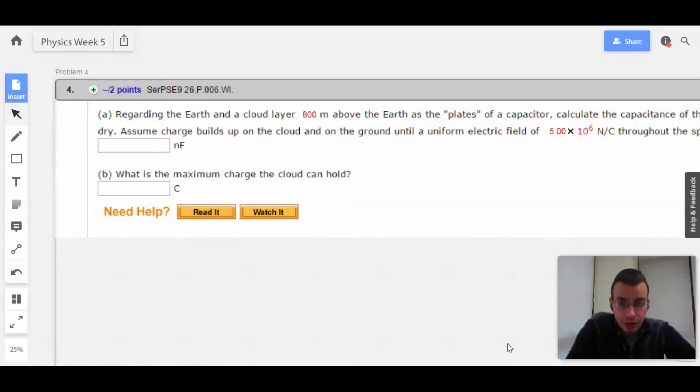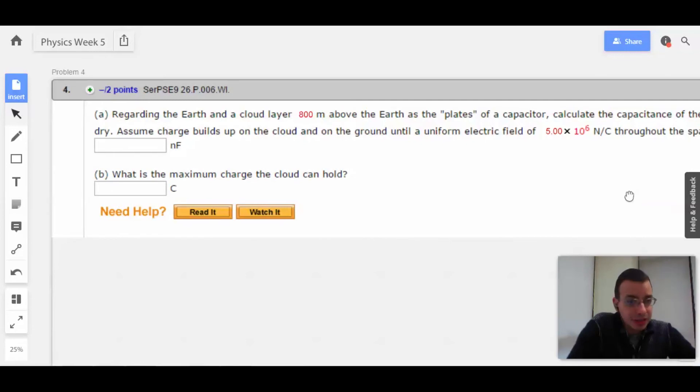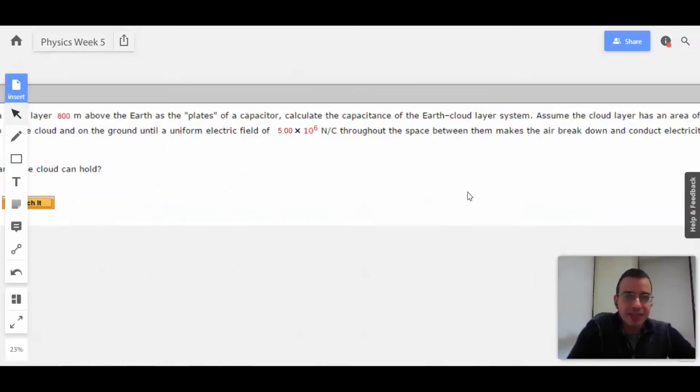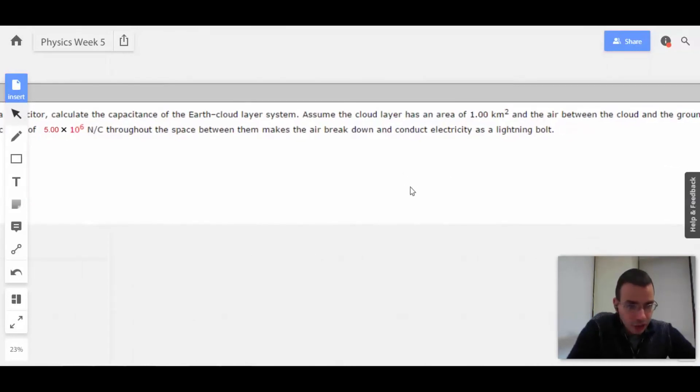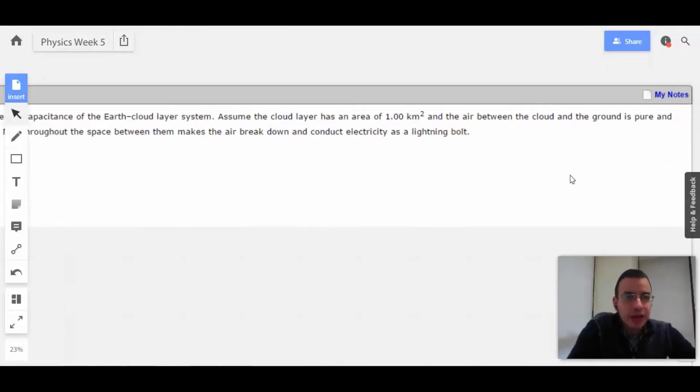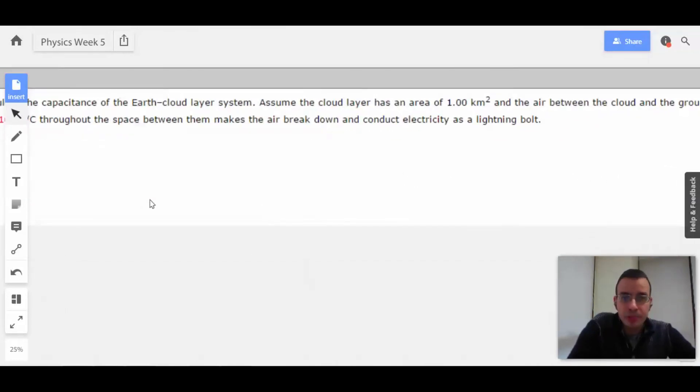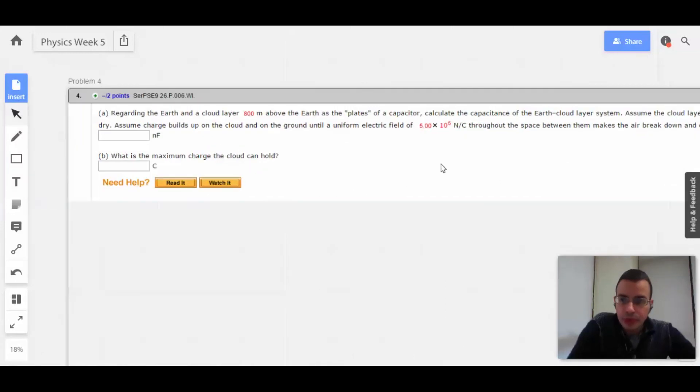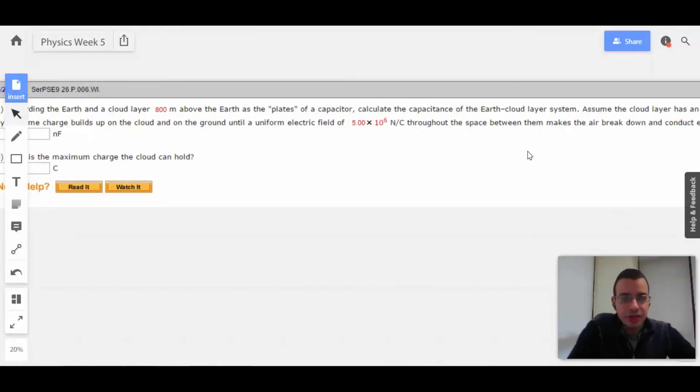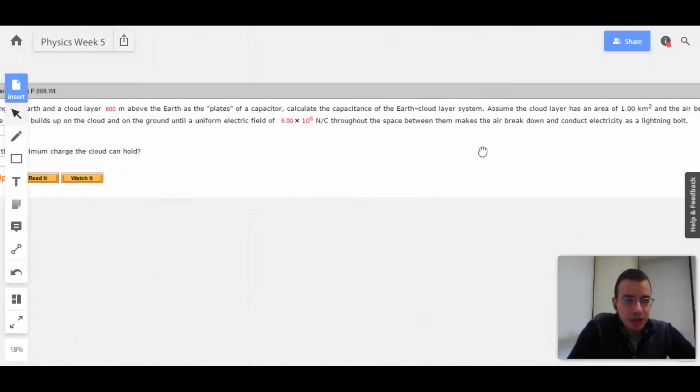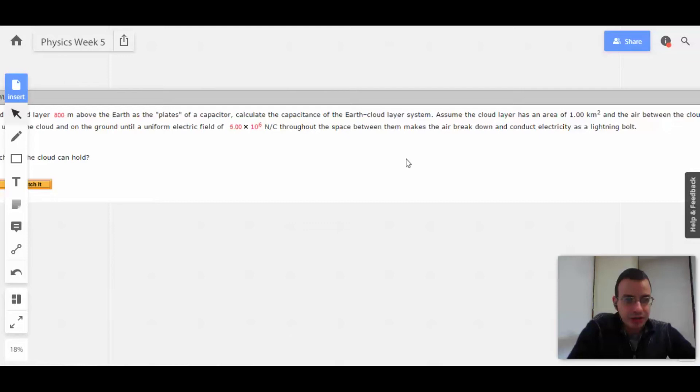Problem 4: Regarding the Earth and a cloud layer 800 meters above the Earth as the plates of a capacitor, calculate the capacitance of the Earth-cloud layer system. Assume the cloud layer has an area of 1 square kilometer and the area between the cloud and ground is pure and dry. Assume charge builds up on the cloud and ground until a uniform electric field throughout the space between them makes the air break down and conduct electricity as a lightning bolt.